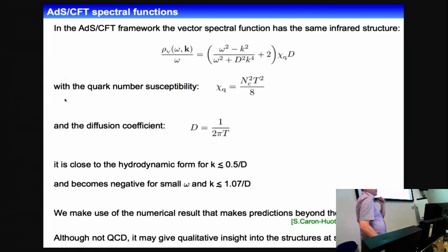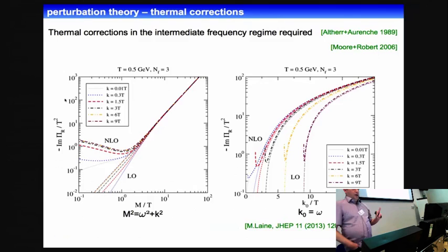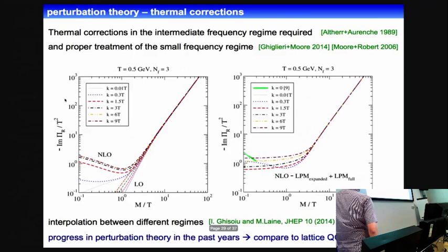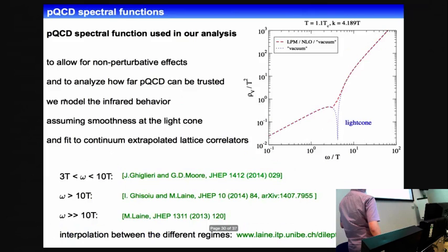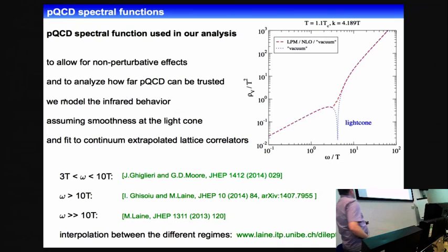One can still learn something from the AdS/CFT calculation about the structure of the spectral function beyond the hydrodynamic limit, although this is not QCD. The perturbative calculations were improved a lot in recent years by including LPM calculations, though one has to be careful about double counting with standard HTL calculations. The interpolation between different scales was done by Nikolajne and collaborators, and the best perturbative spectral function at the moment is shown here as dashed curves. This is what we use to compare to our lattice calculation.